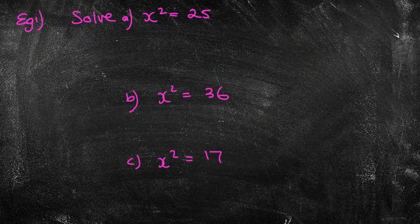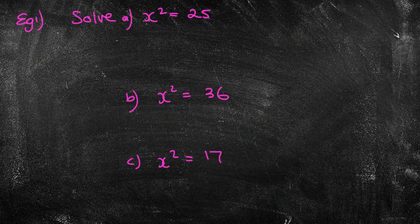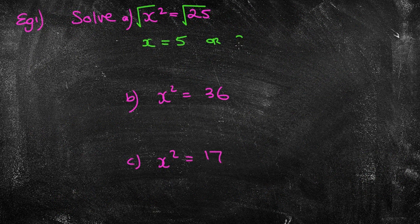So let's have a look at some of these questions. The first one says solve x squared equals 25. So what I'm going to do is square root both sides. I now get x equals 5. But we also know that x could also be negative 5.